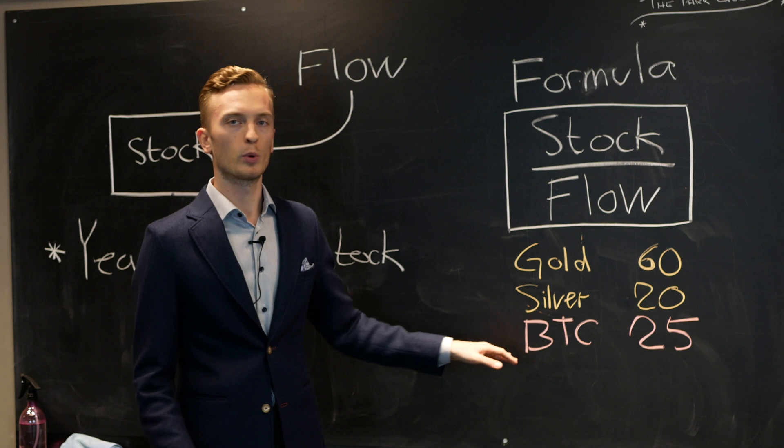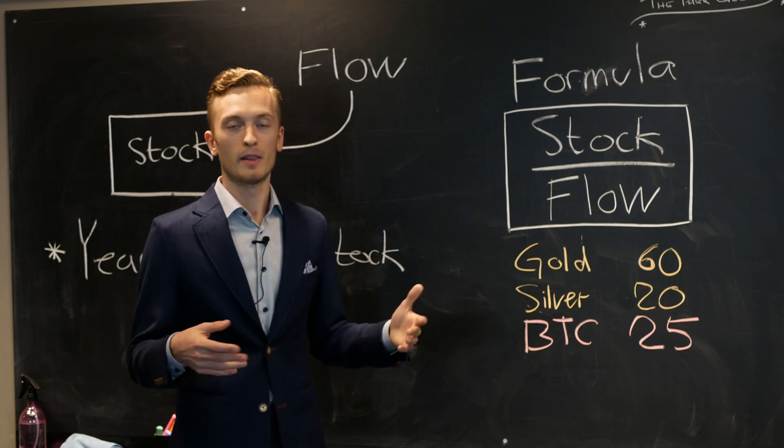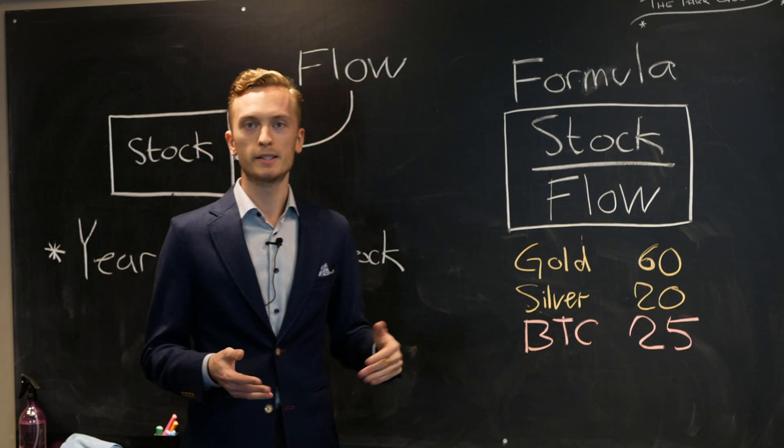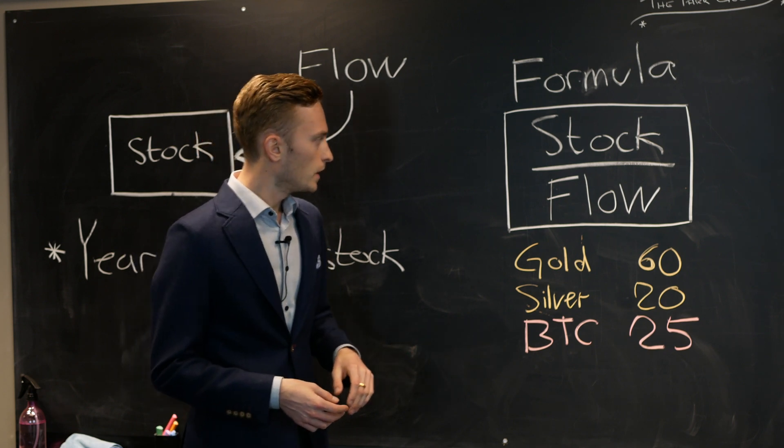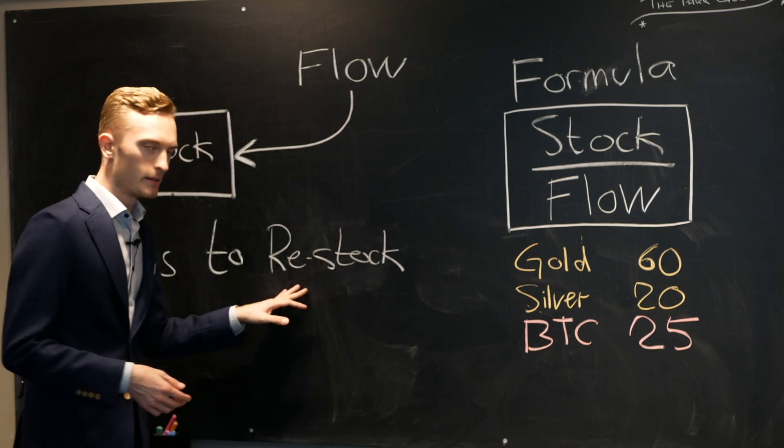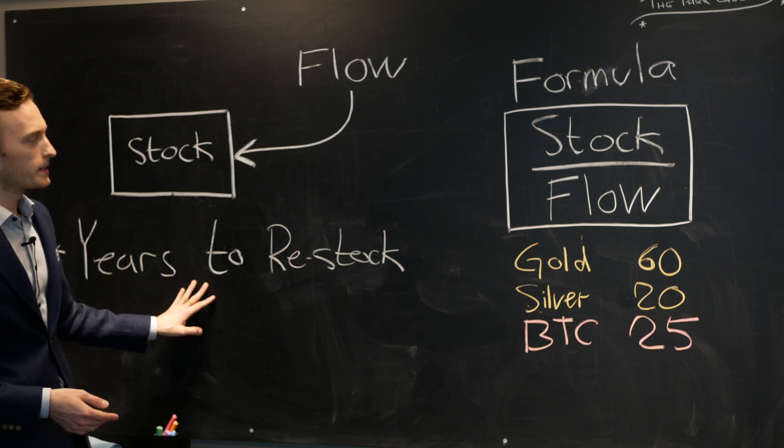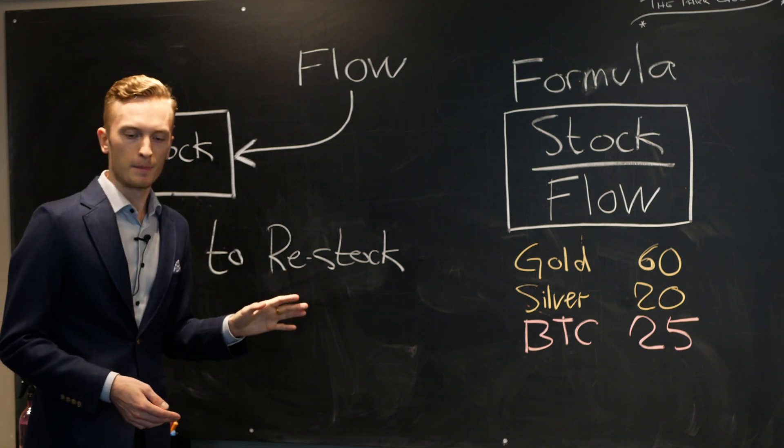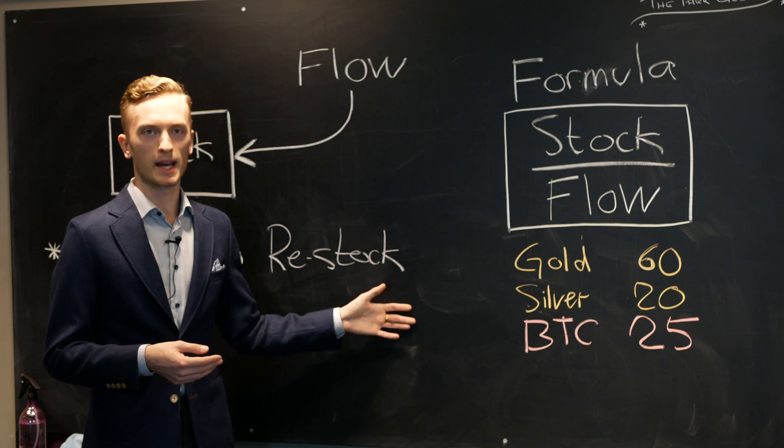And then for Bitcoin, if we were to lose all of the Bitcoins that exist in the market today, that we all have mined and are in the system, it would take us 25 years at the current pace to re-mine that amount of Bitcoin. And that is really the practical implication of the stock to flow model. The number of years it takes to restock. That is what the stock to flow model tells us. And that is of course an interesting number for a scarce asset.